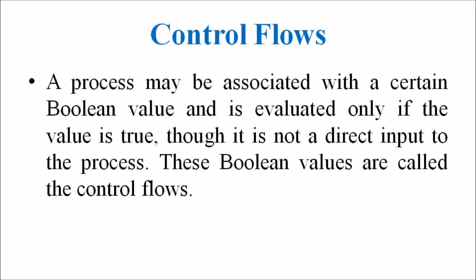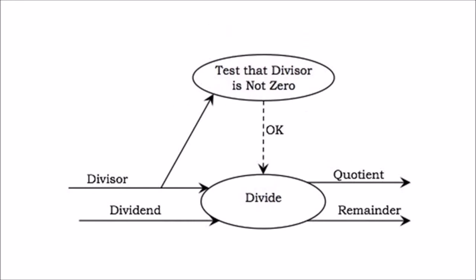Finally, we are discussing control flows. A process may be associated with a certain Boolean value and is evaluated only if the value is true, though it is not a direct input to the process. These Boolean values are called control flows. In the data flow diagram, control flows are represented by a dotted arc from the process producing the Boolean value to the process controlled by it. For example, the figure represents a DFD of arithmetic division. The divisor is tested for non-zero; if it is not zero, the control flow OK has a value true, and subsequently the divide process computes the quotient and the remainder.